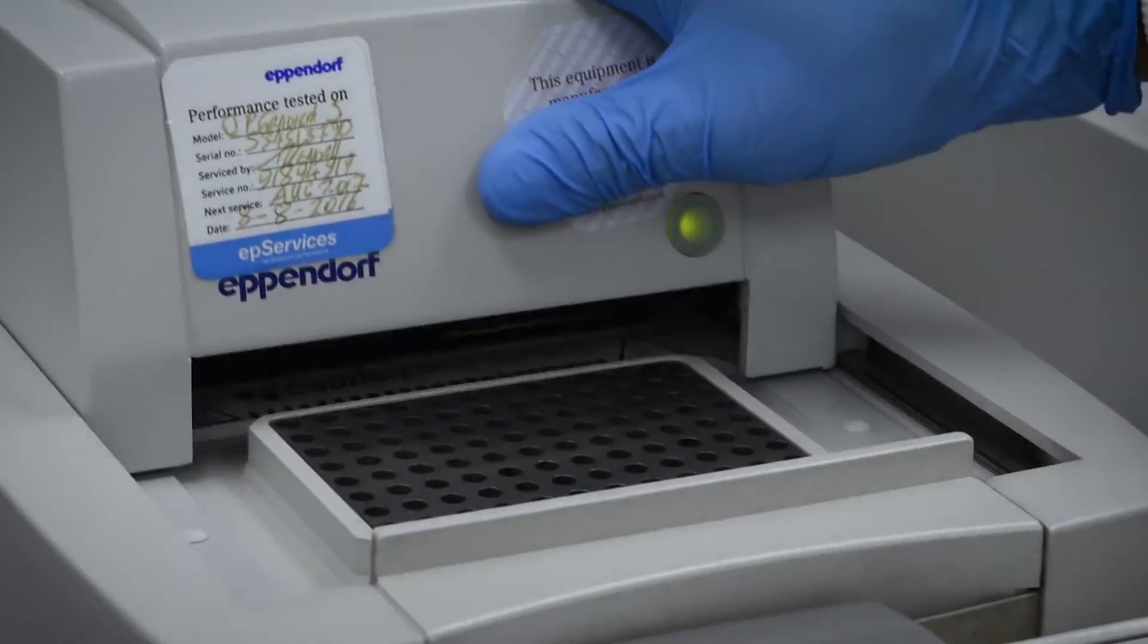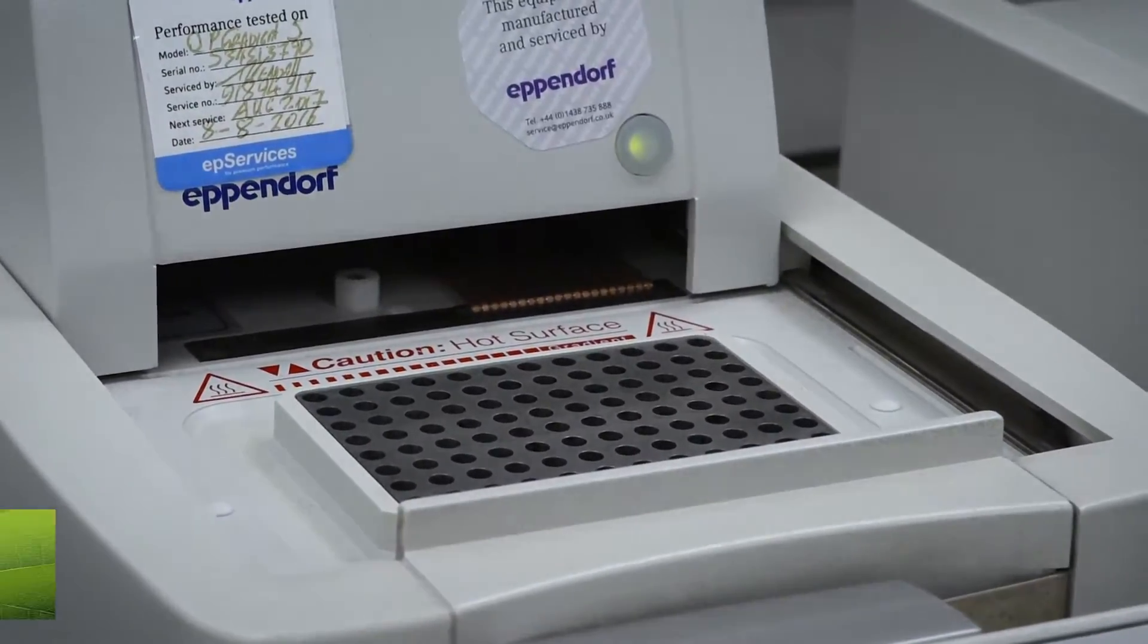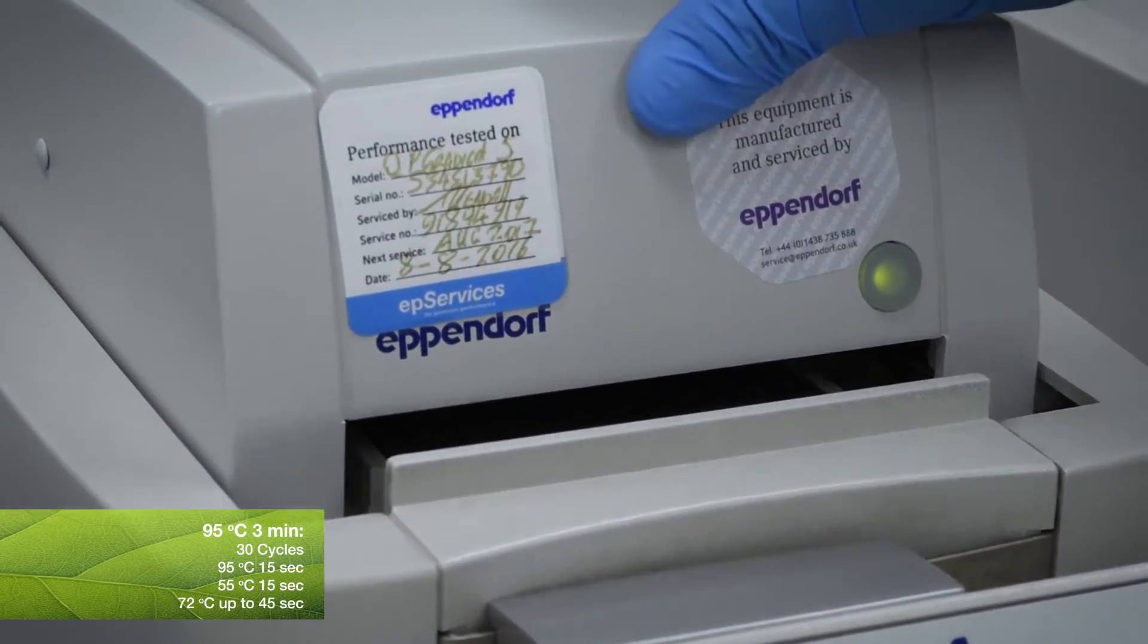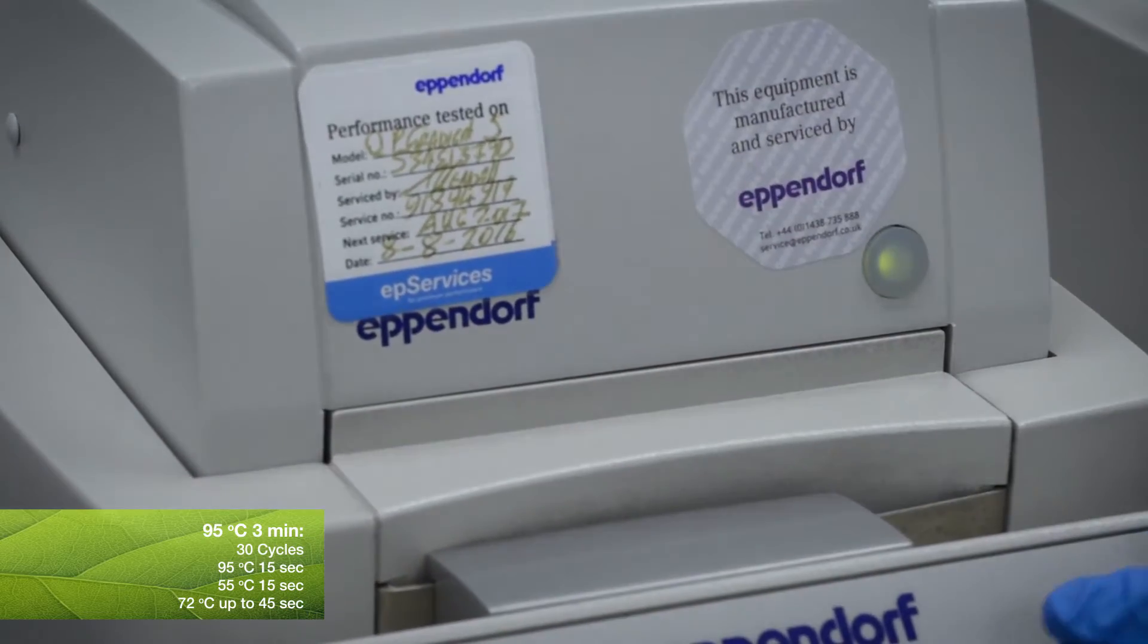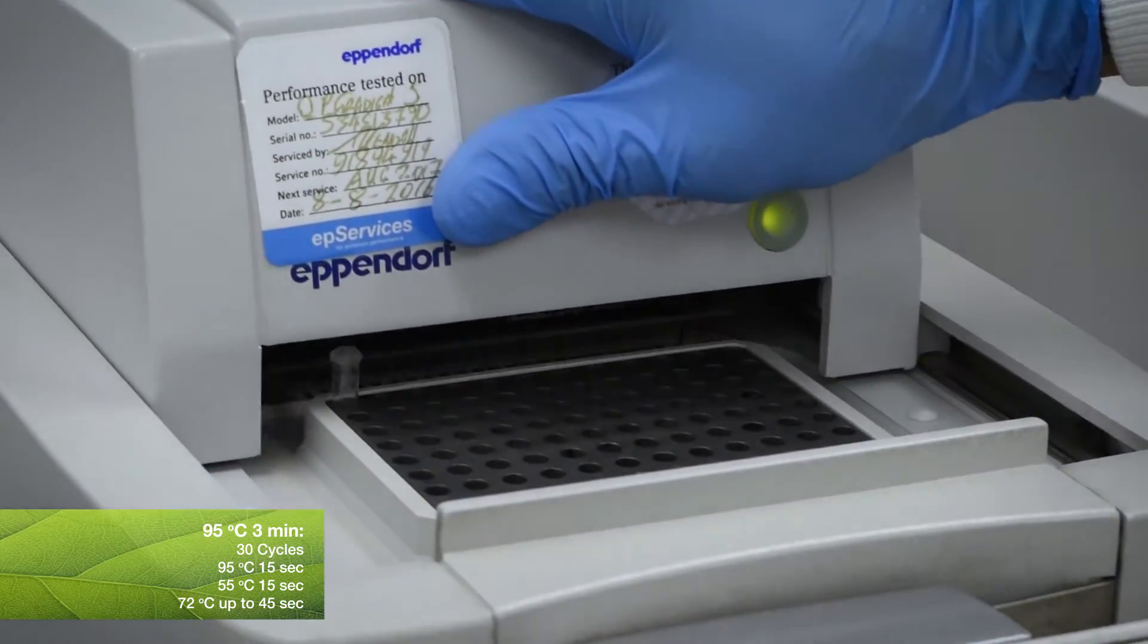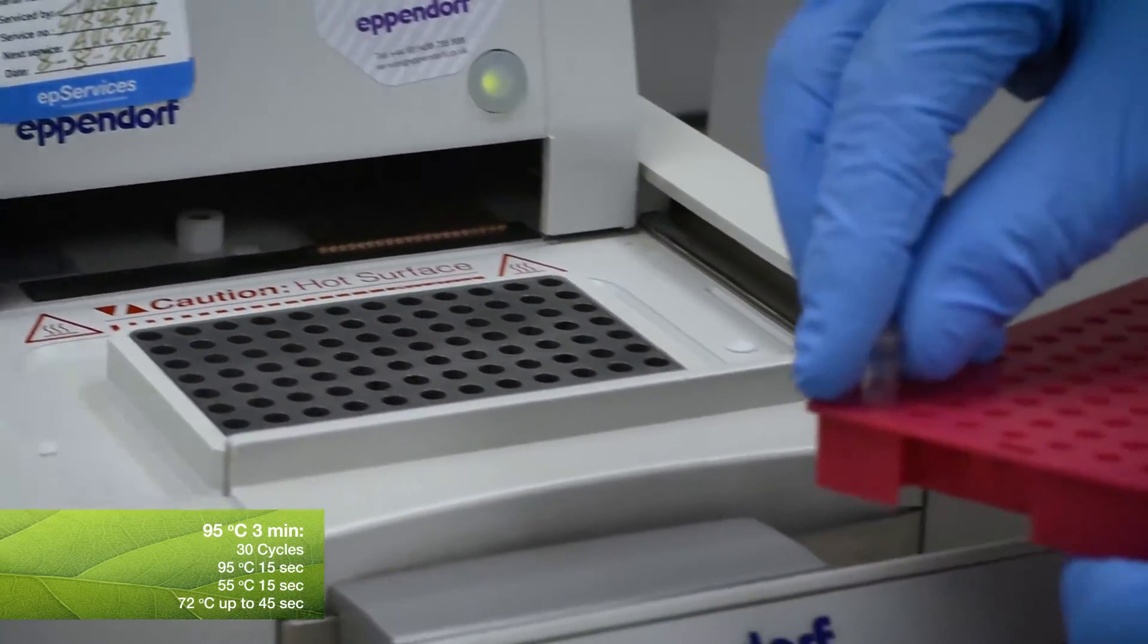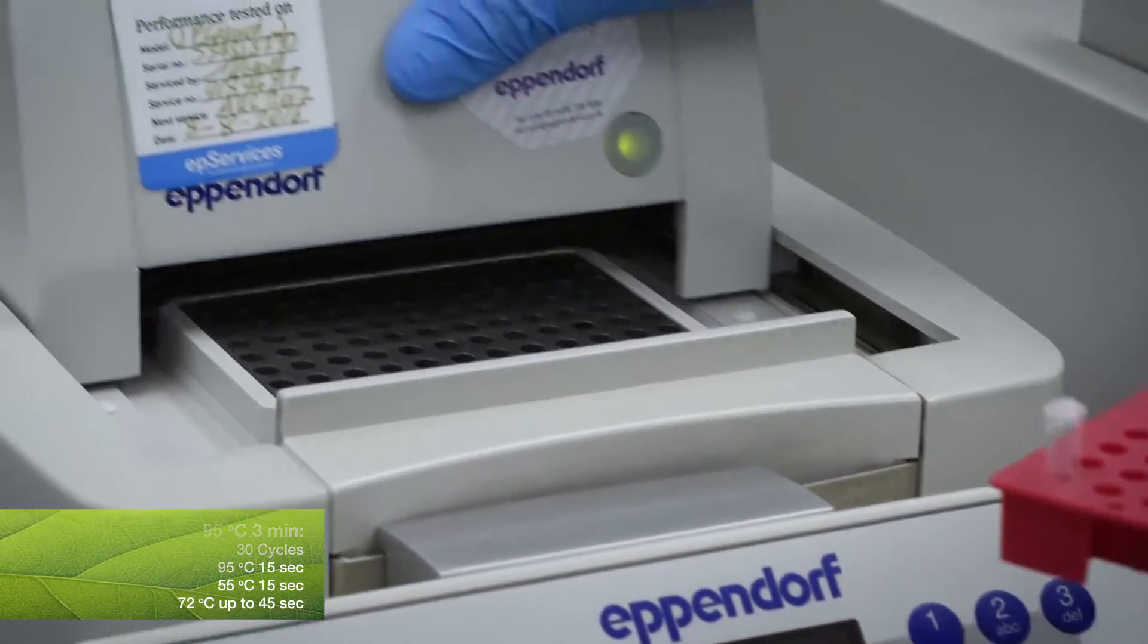The PCR machine is set up for an initial denaturation at 95 degrees for three minutes, followed by 30 cycles of 95 degrees for 15 seconds, 55 degrees for 15 seconds, and 72 degrees for up to 45 seconds depending on the length of your amplicon.